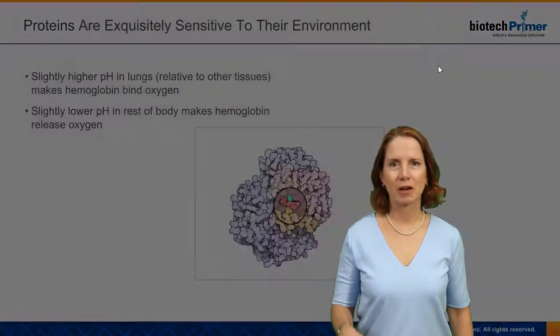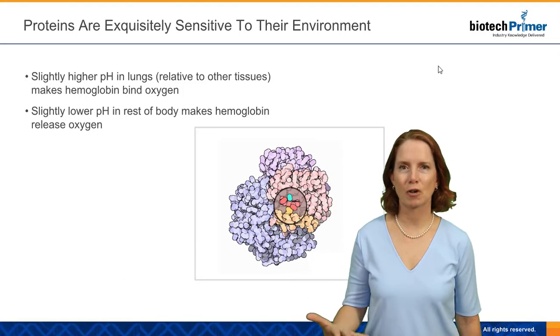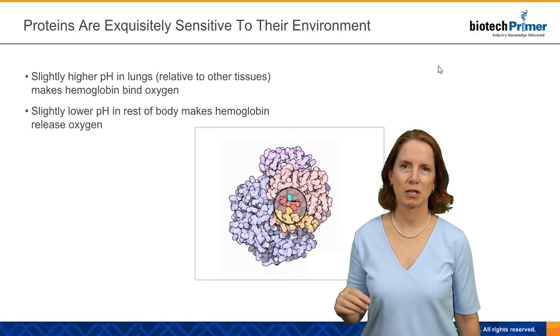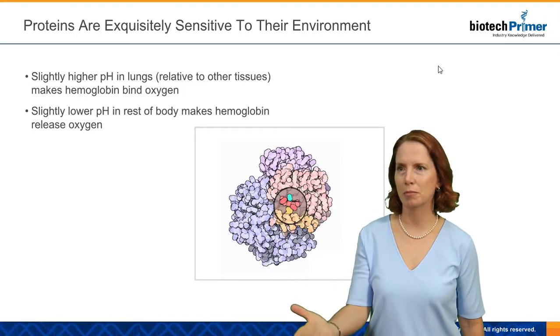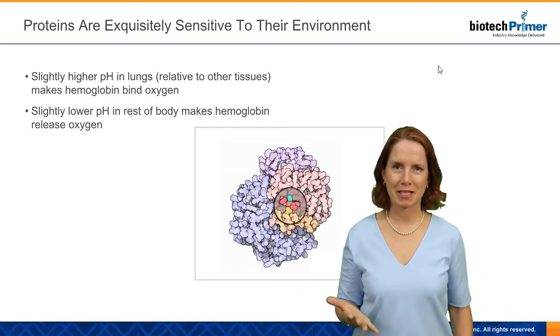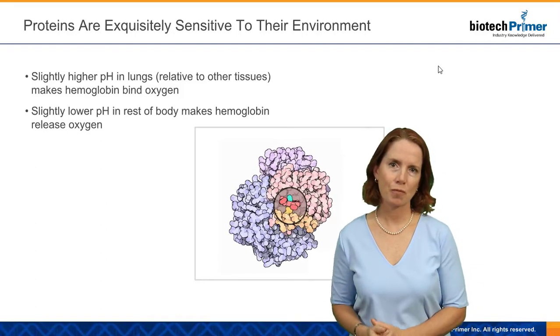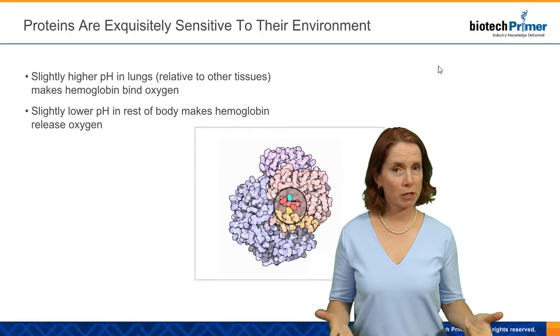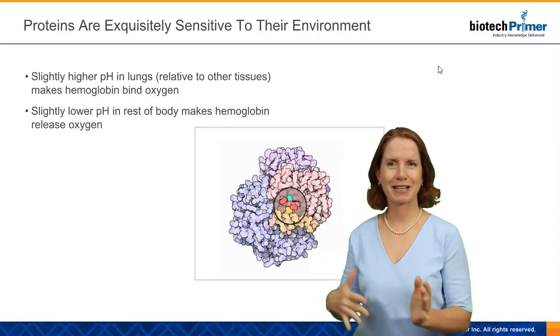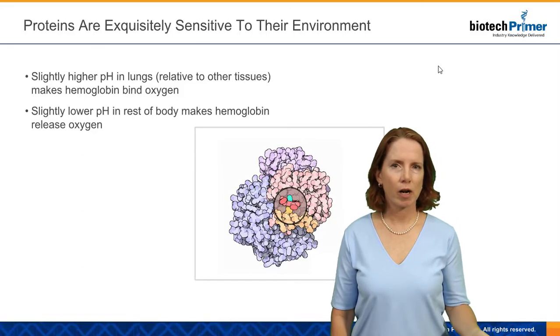And so finally, I just want to give an example, a physiological example, of how protein structure really dictates protein function. And that is in the hemoglobin protein. So hemoglobin is the protein contained within our red blood cells that transports oxygen throughout the body. So that may sound straightforward, transport oxygen, carry it from one place to another. But if we think about that, what that protein is doing is pretty incredible.